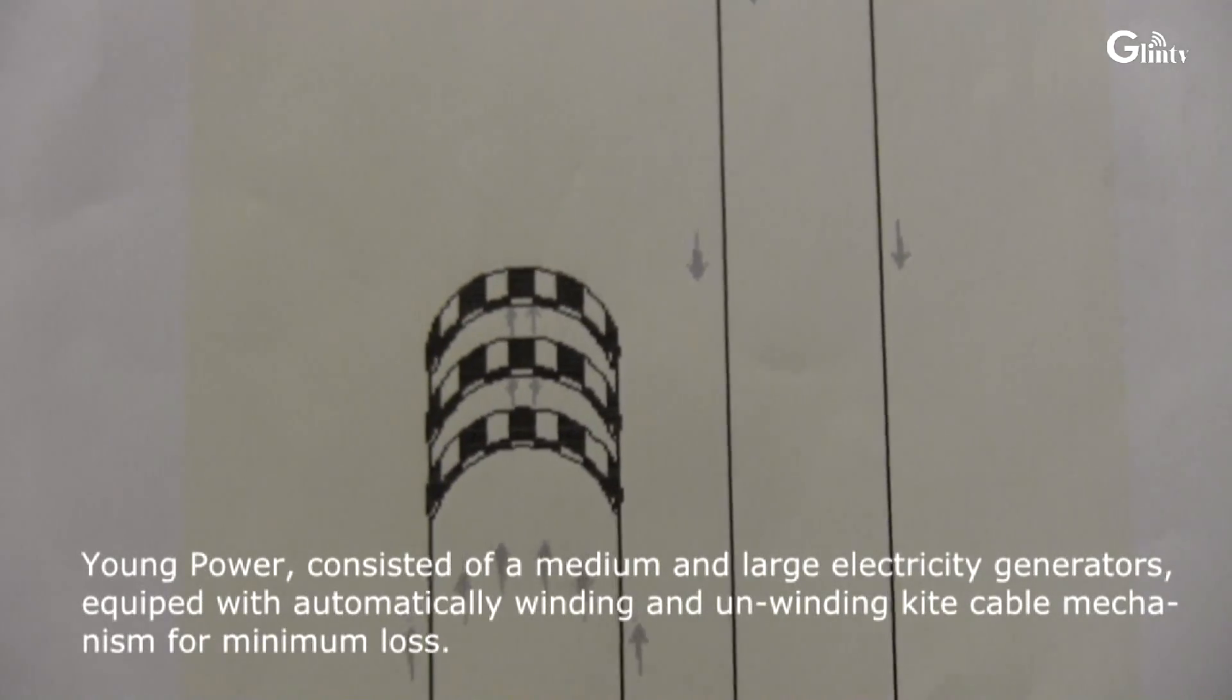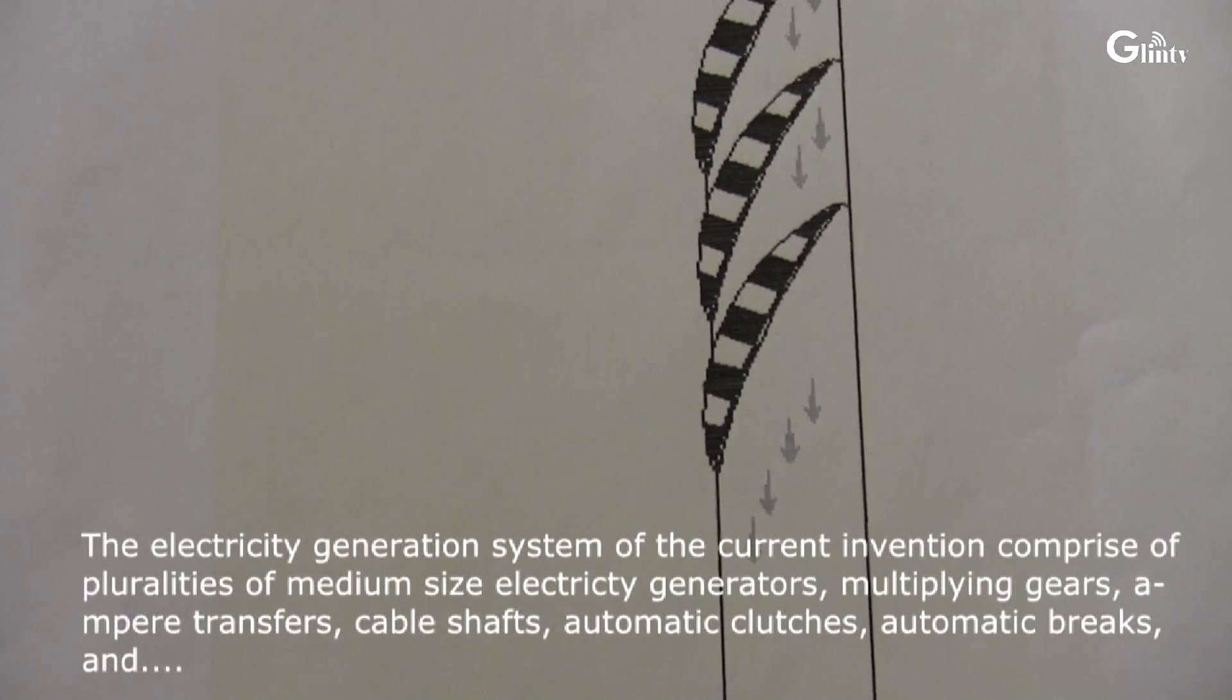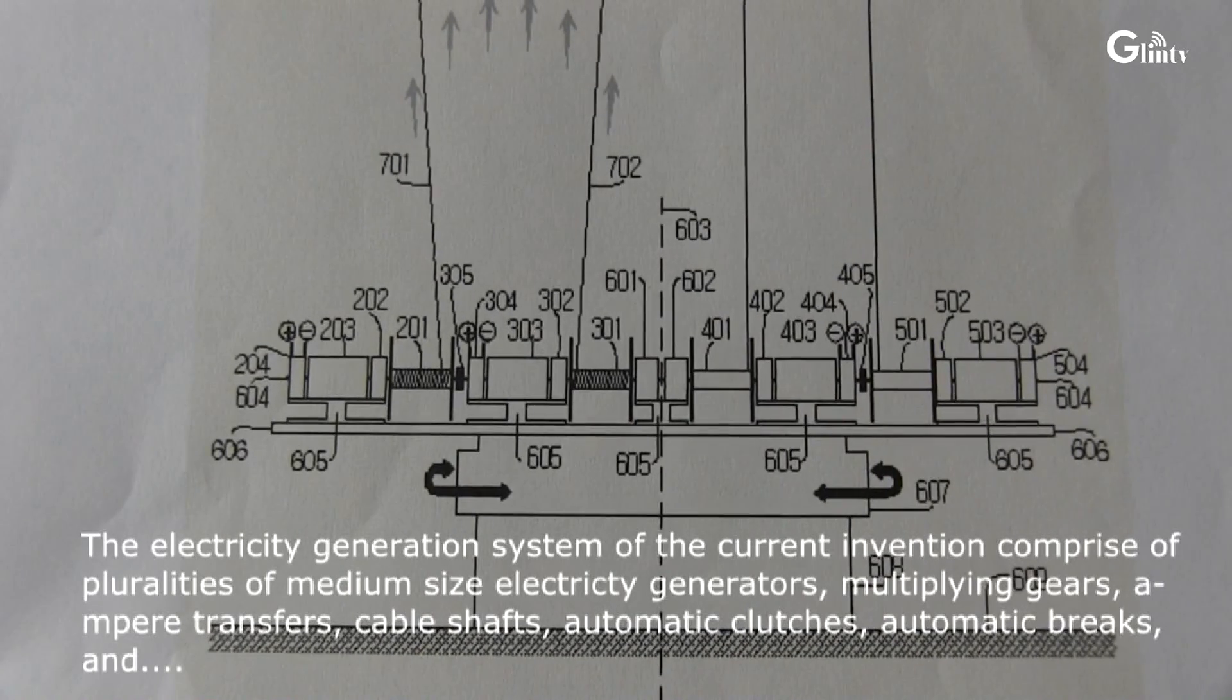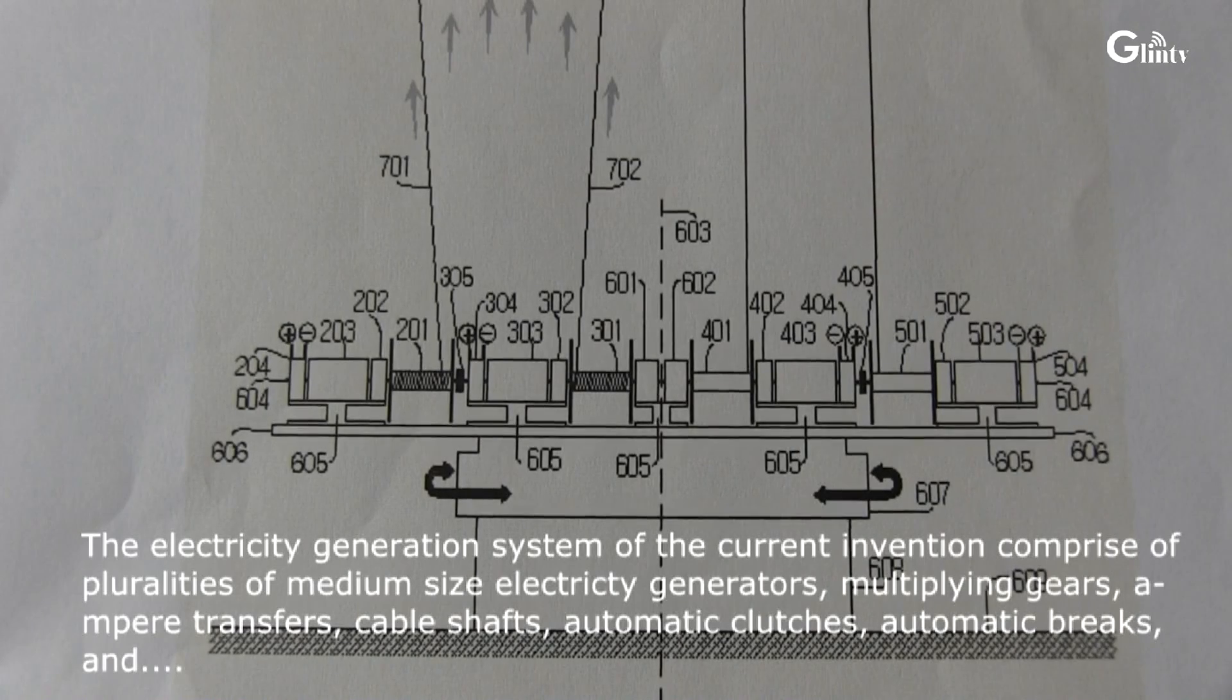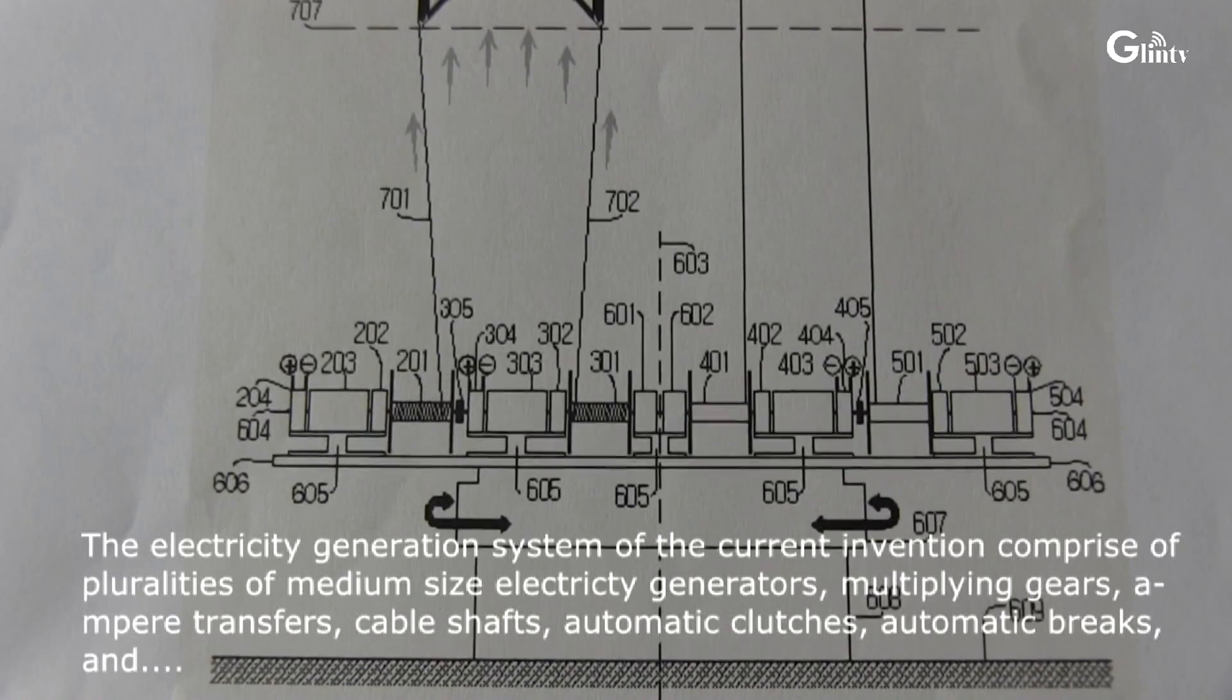This frame is mounted on one large power generator system that rotates 360 degrees freely clockwise and counterclockwise. The large power generator system is mounted on a round supporting frame firmly installed on the ground.